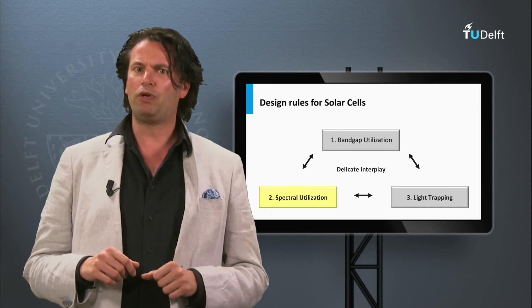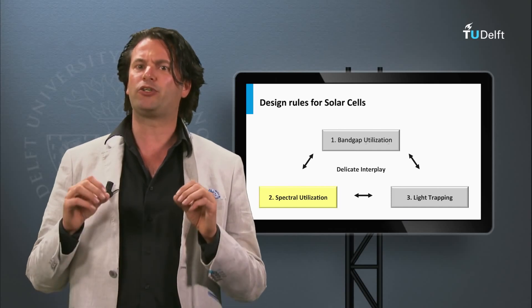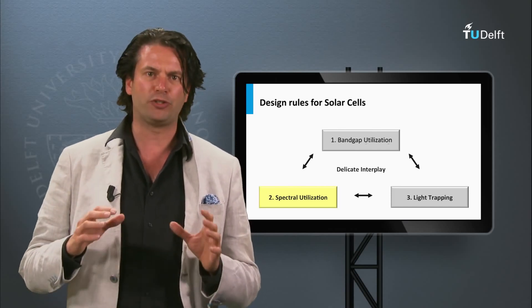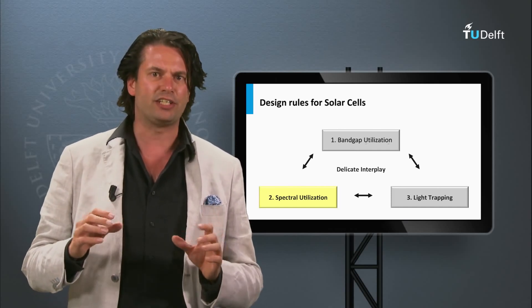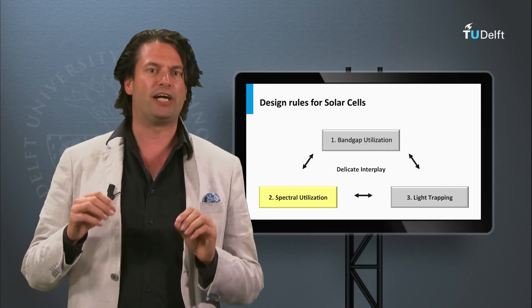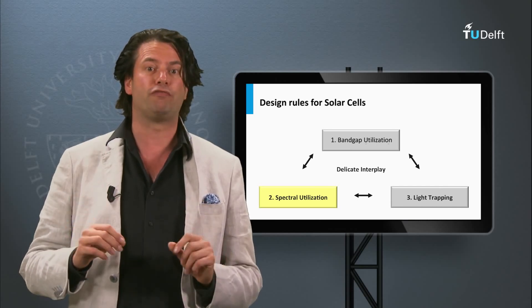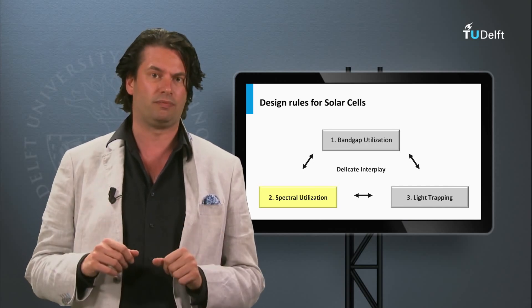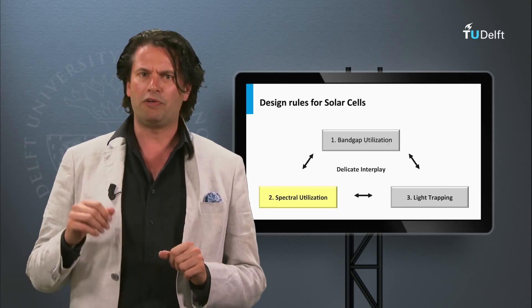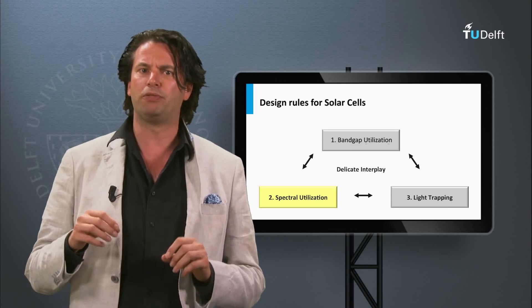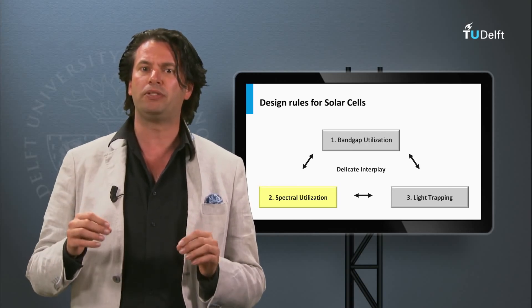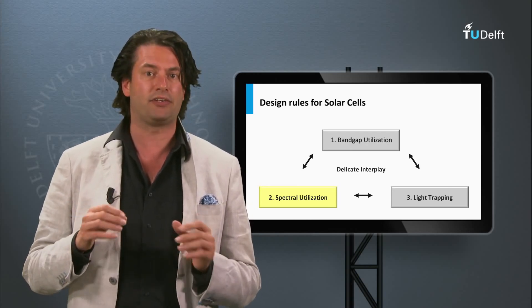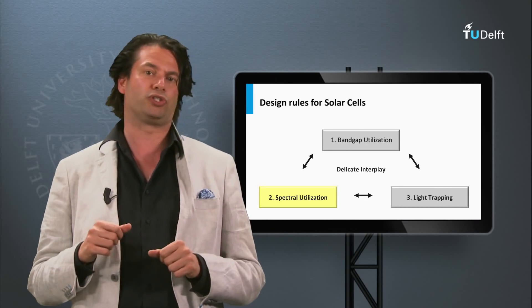Secondly, we look at the spectral utilization. The spectral utilization is first determined by the choice of materials which make the solar cell. We will discuss that the bandgap of the materials determines the maximum current density generated by the solar cell.